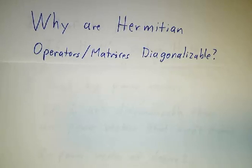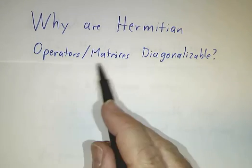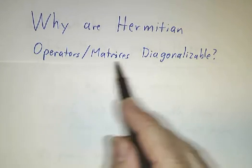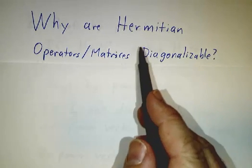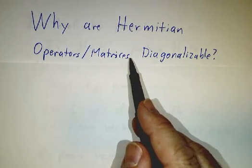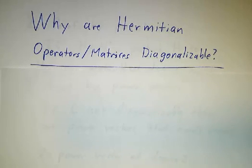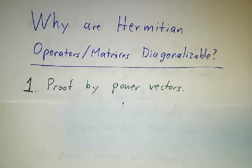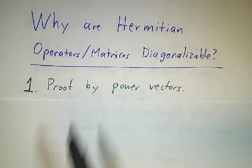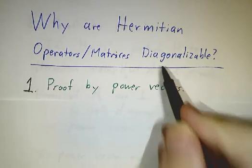In the last video, we studied Hermitian operators and matrices. We discovered that Hermitian matrices had real eigenvalues and orthogonal eigenvectors, and we claimed that they were diagonalizable. In this video, we're going to prove that they are diagonalizable. We're going to do it three ways.